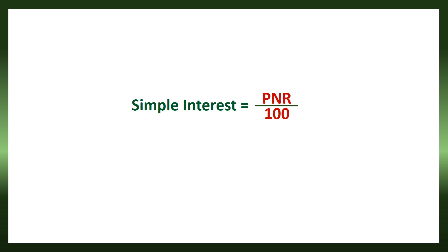We can use the same formula to find simple interest if P, N, and R are given. Or, we can find the principal if all other values are known. We can find the number of years when P, R, and simple interest are known. And we can also find the rate of interest when P, N, and simple interest are known. All these values can be found using the same formula. That is all about calculating simple interest. Thank you for watching this video.